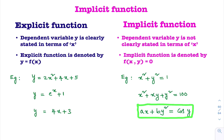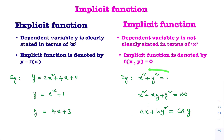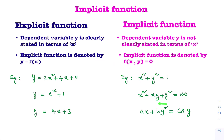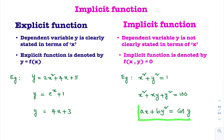One more important point: unlike the previous example x squared plus y squared equal to 1, you cannot convert ax plus by squared equal to cos y into an explicit function. You cannot state y clearly in terms of x here, because cos y is present. It is not possible to isolate y clearly in terms of x.